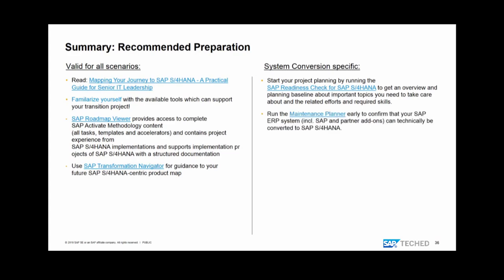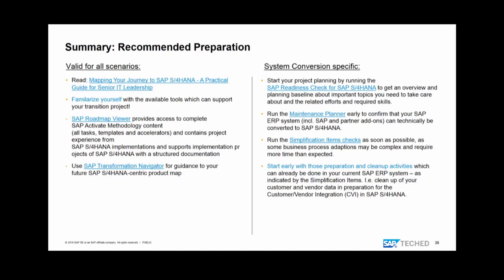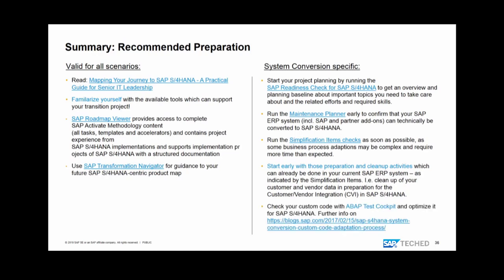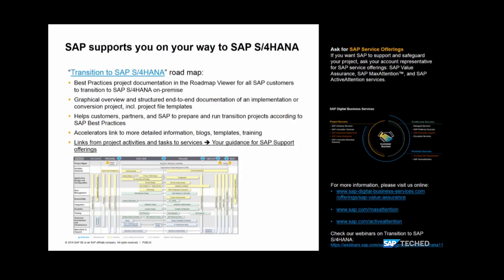For system conversion specifically: start your project planning by running the SAP Readiness Check early — it covers all areas requiring action, especially add-ons and other topics. Validate your project planning based on the findings. Run the Maintenance Planner to confirm your SAP system is ready and can be converted with a consistent software stack successor. Start the simplification item check as soon as possible because some business process adaptations — like Customer/Vendor Integration and migration to Business Partner — are very time-consuming. The earlier you identify and act on them, the easier it is to keep your timelines.